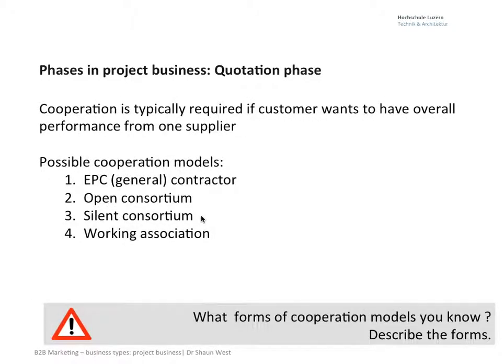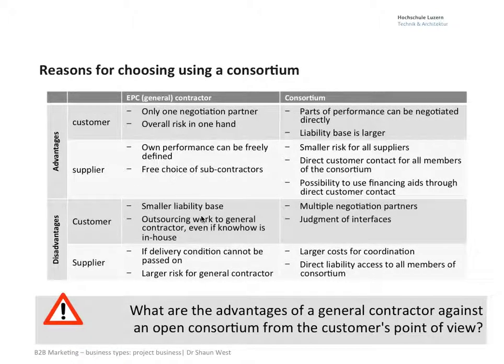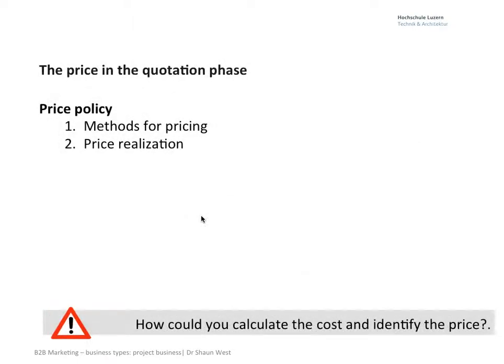We'll look at what forms of cooperation we need and the reasons for consortia — this is very important if you're dealing with large projects and you want to share some risks. I want to understand pricing during the quotation phases, which is very important because you often bid at very low margins, and then behaviours are dictated differently as you go through into the execution phase.